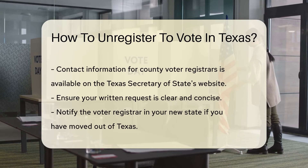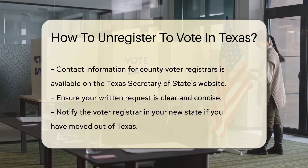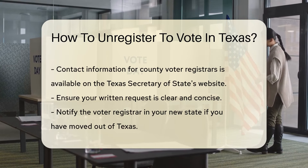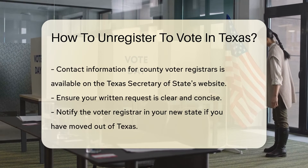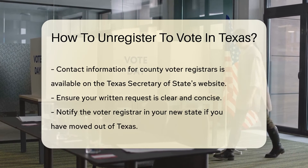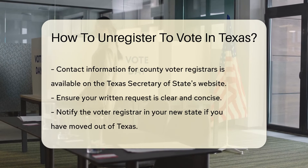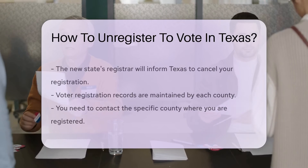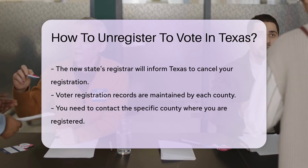You can find the contact information for your county voter registrar on the Texas Secretary of State's website. Make sure your written request is clear and concise. If you have moved out of Texas, you can also notify the voter registrar in your new state. They will inform Texas to cancel your registration.